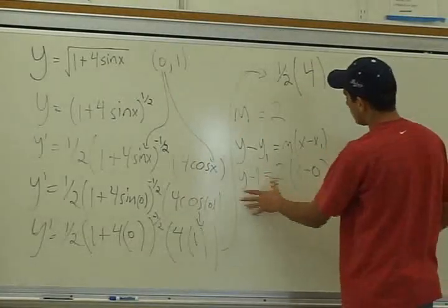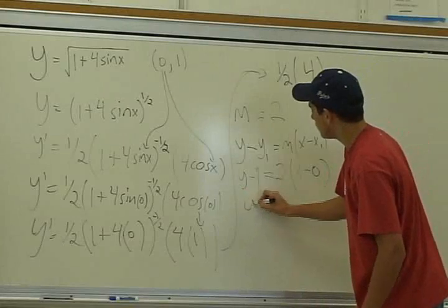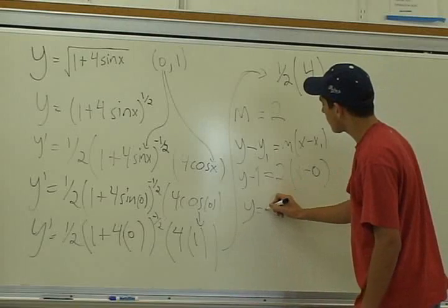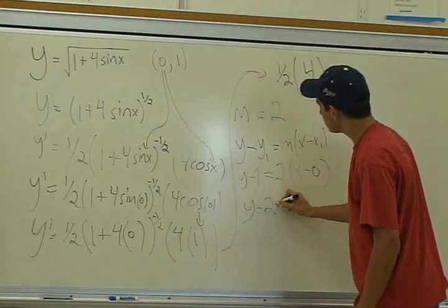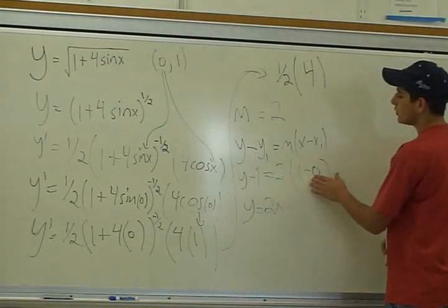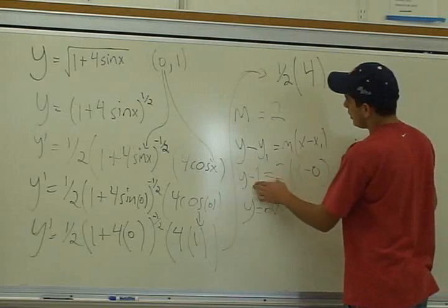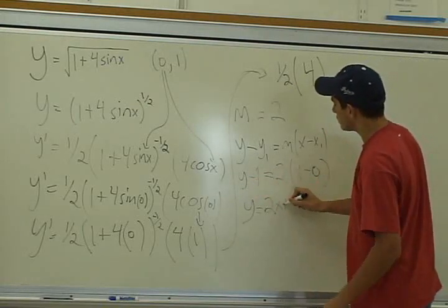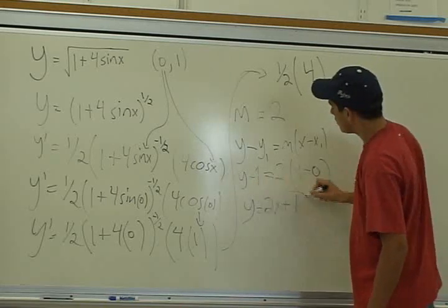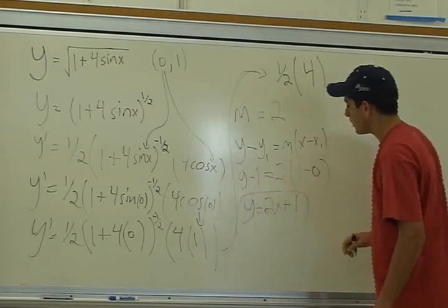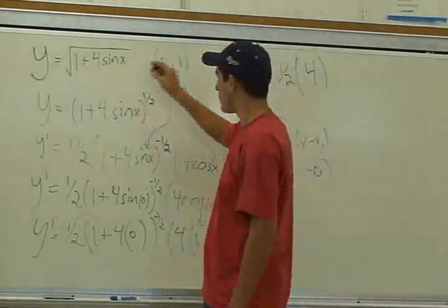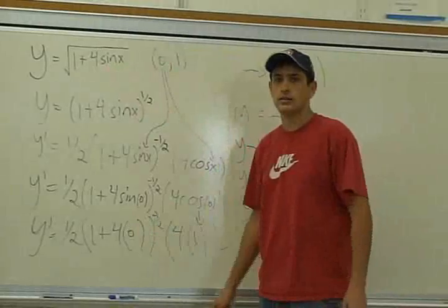And so you just want to write this in y equals, so it looks nicer. So 2x—2x times 0, just 2x. And then you've got to add the 1 over, so this is just plus 1. So this right here is the equation of the tangent line of this function at that point. That's it.